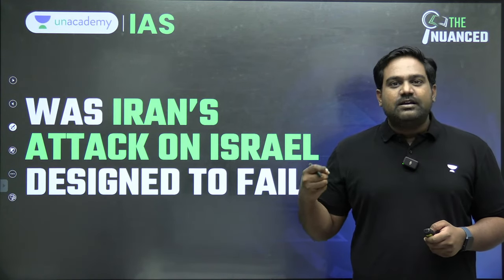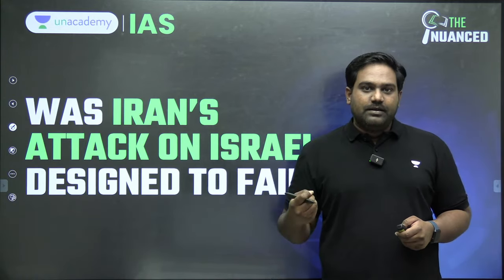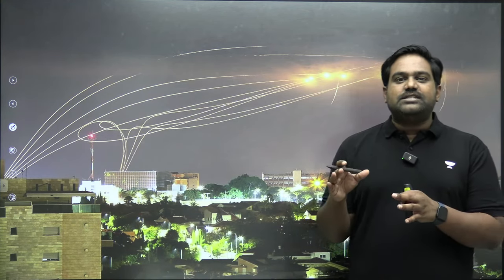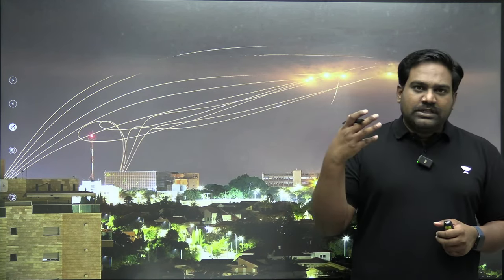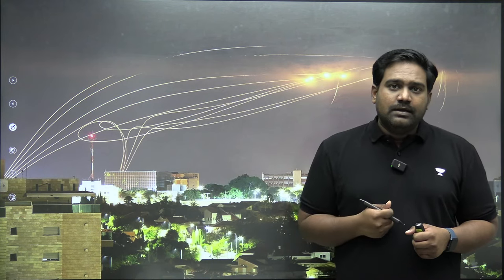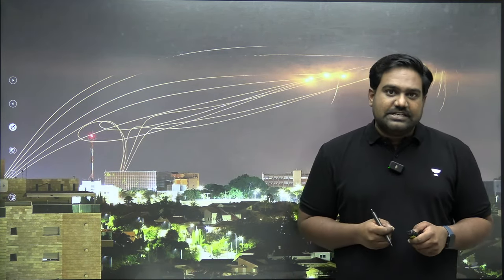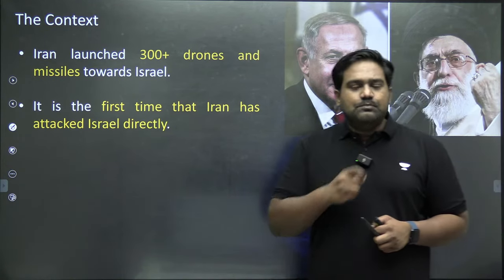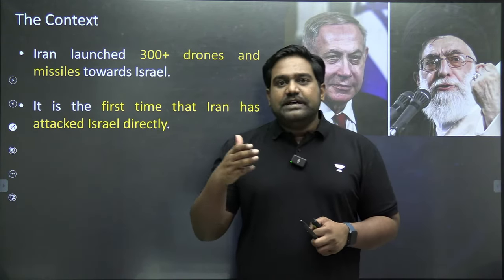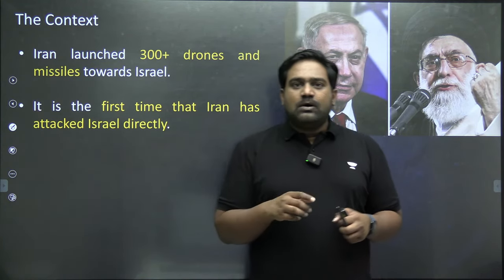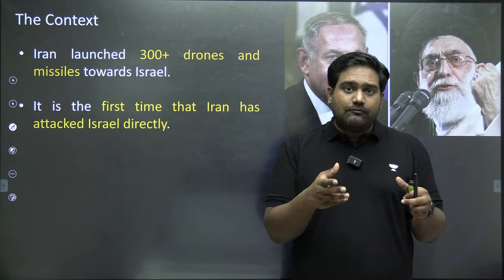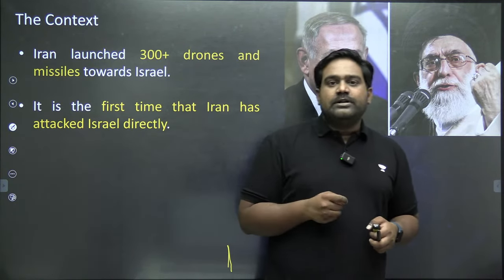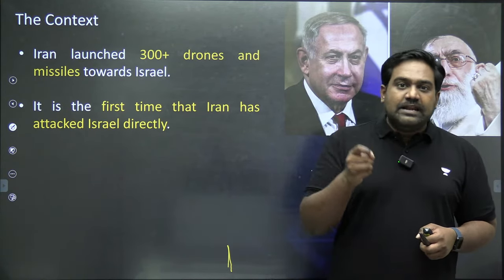The topic for today's discussion is the latest clashes that have broken out between Iran and Israel. As you all read in newspapers, the last 48 hours have been quite intense as far as the West Asia region is concerned. Iran fired more than 300 missiles and drones targeted towards Israel, marking one of the biggest escalations in the West Asia region. In this session, we will talk about the context, the series of events, and the brief history of the Iran-Israel relationship, the recent events centered around Gaza, and how these events have destabilized the larger West Asia region.